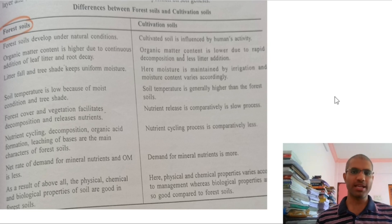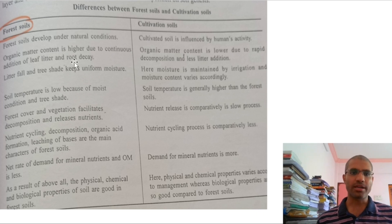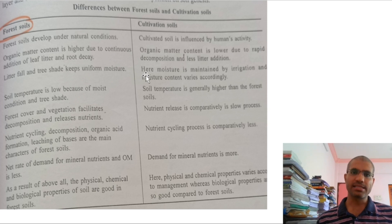Forest soil is found in forest regions and develops under natural conditions, whereas cultivated soil is found in agricultural areas and is influenced by human activity. Organic matter content is high in forest soil but less in cultivated soil. Litter fall in forest soil provides shade, maintaining lower temperature, while cultivated soil has less litter fall, resulting in lower and non-uniform moisture content and higher temperature. Try to remember four to five key differences.